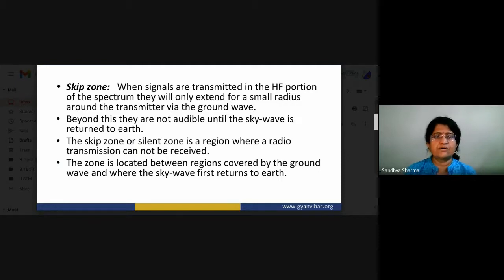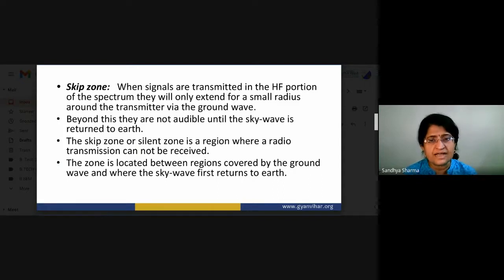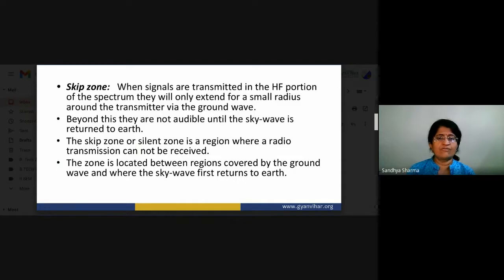When signals are transmitted in the HF portion of the spectrum, they only extend for a small radius around the transmitter via the ground wave. Beyond this they are not audible until the sky wave returns to Earth. The skip zone or silent zone is the region where a radio transmission cannot be received — located between the area covered by the ground wave and where the sky wave first returns to Earth.